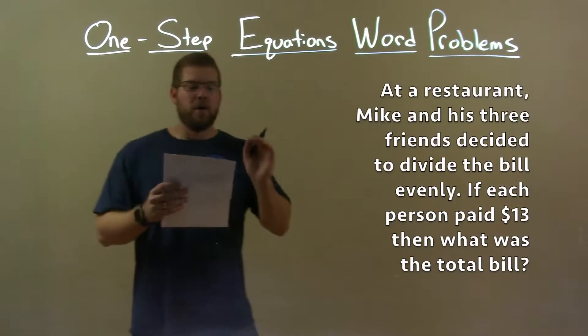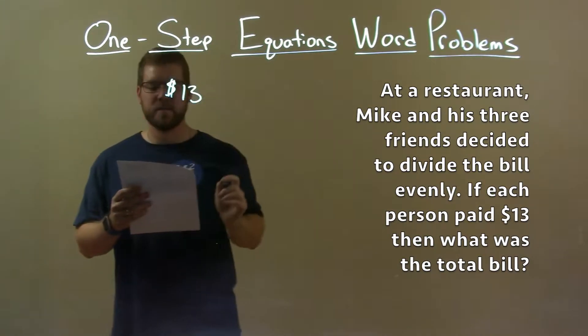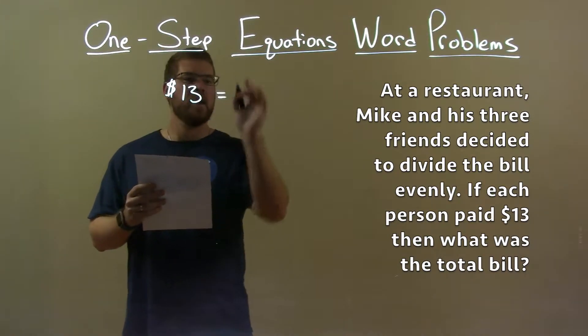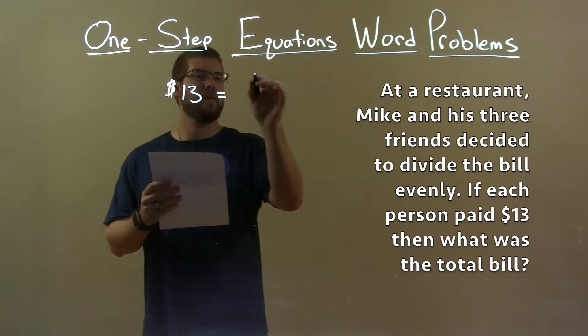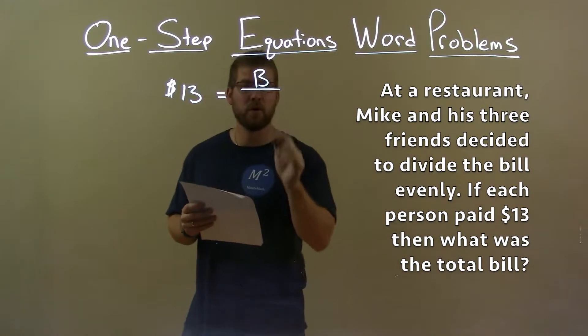So we know that each person paid $13. If the total bill, let's call that B, was divided evenly between Mike and his three friends, a total of four ways,